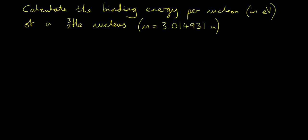Let's try an example. Calculate the binding energy per nucleon in electron volts of a helium-3 nucleus, where the mass of a helium-3 nucleus is 3.014931U, U being the atomic mass unit. First you'll need to look up the masses of protons and neutrons from your data booklet. So the mass of a proton is 1.007276U and the mass of a neutron is 1.008665U. Notice how many significant figures I'm using.